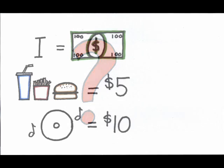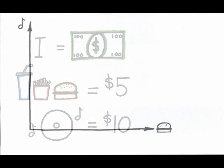So, let's say our consumer has an income of $100, consumes product X, combo meals, and product Y, CDs, where the price of the combo meal, product X, is $5, and the price of Y, the CD, is $10. If the consumer spends all income on just CDs and combo meals, what does the budget look like?